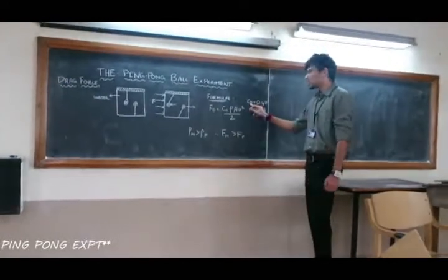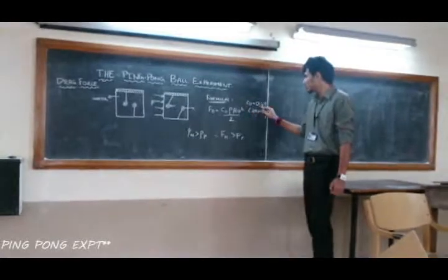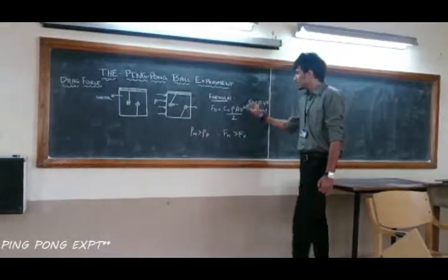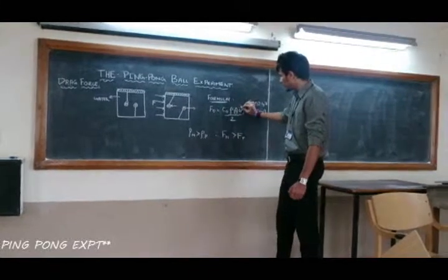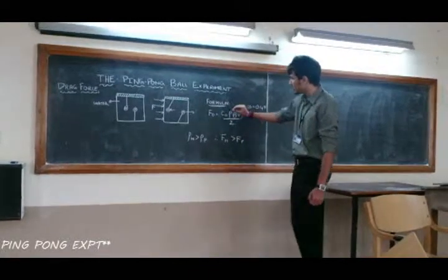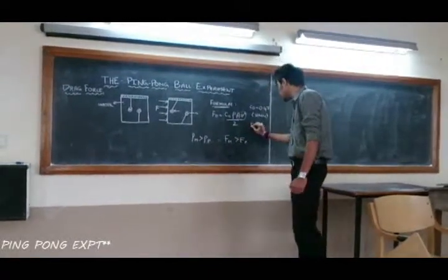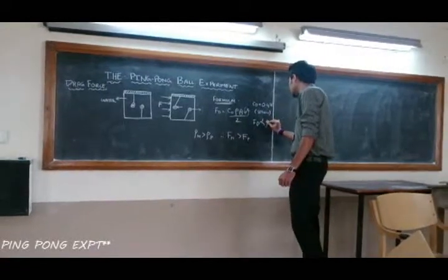So for a sphere it is found that drag coefficient or CD is equal to 0.47. If we keep all the constants like CD, A and the velocity as constant, we can see that D is directly proportional to rho, that is the density.